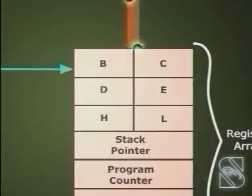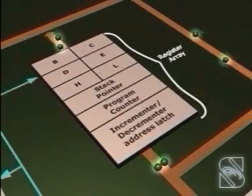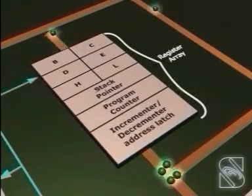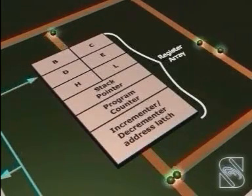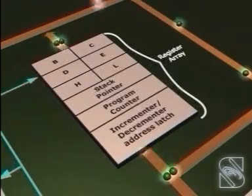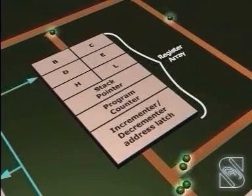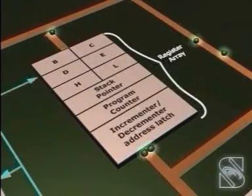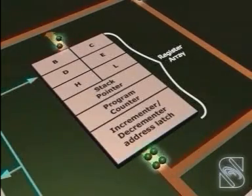Program Counter or PC. This 16-bit register deals with sequencing the execution of instructions. This register is also a memory pointer. The microprocessor uses this register to sequence the execution of the instructions. The function of the program counter is to point the address of the next instruction to be executed. At the end of the execution of an instruction, the program counter is incremented by one pointing to the next memory location where the next instruction is available.